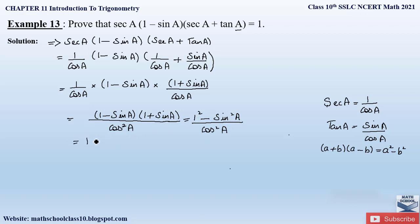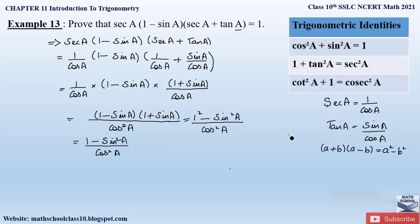Applying the identity, we get 1 squared minus sin squared A divided by cos squared A, which is 1 minus sin squared A over cos squared A. We also studied the trigonometric identities in Exercise 11.4: cos squared A plus sin squared A equals 1; 1 plus tan squared A equals sec squared A; and cot squared A plus 1 equals cosec squared A.